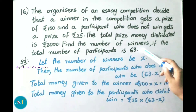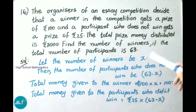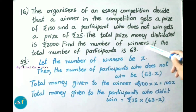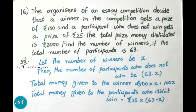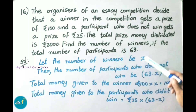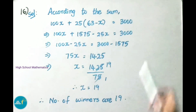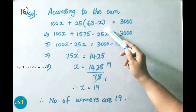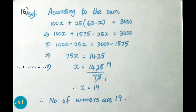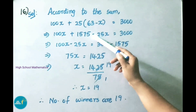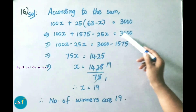Because the total number of participants is 63, if the winners are x, the participants who do not win will be 63 minus x. Total money given to winners is 100 times x, which is 100x. Total money given to non-winners is 25 times (63 minus x). According to the sum: 100x plus 25 times (63 minus x) equals 3000. That gives 100x plus 1575 minus 25x equals 3000. So 75x equals 3000 minus 1575, which is 1425.